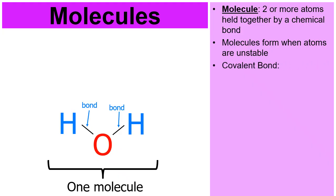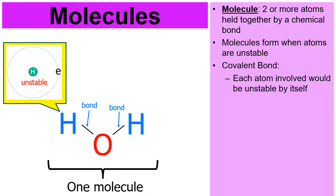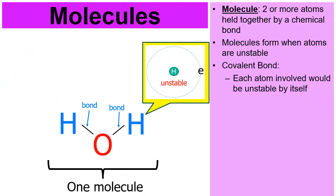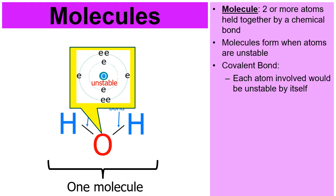We're going to start by learning about what are called covalent bonds. That's what we use the dash to represent — a covalent bond. Each atom involved will be unstable by itself. This hydrogen is unstable by itself. This hydrogen is unstable by itself. The oxygen is unstable by itself.